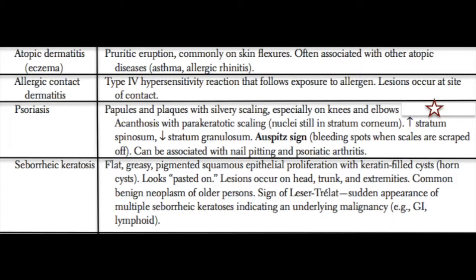Atopic dermatitis, also known as eczema, is a pruritic eruption commonly seen on the flexors of the skin — you may see it on the flexors of the elbow or knees, two very common places for eczema. This is usually associated with other atopic disorders including asthma or other common allergies.